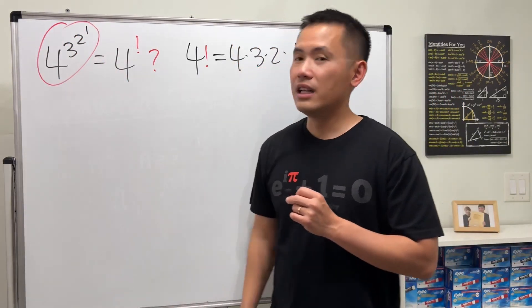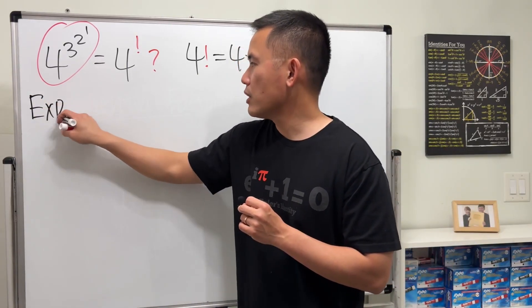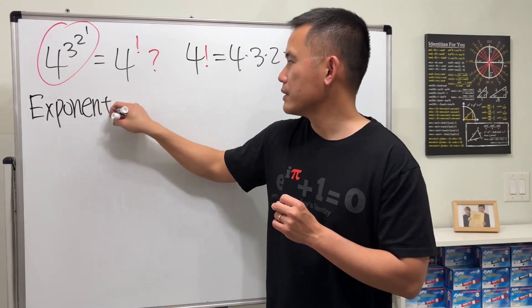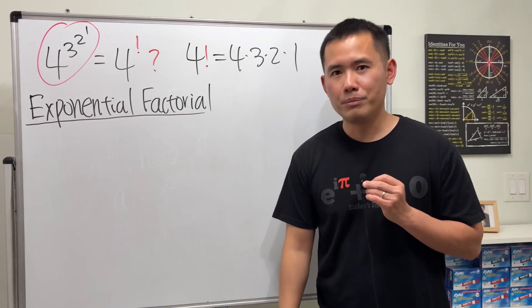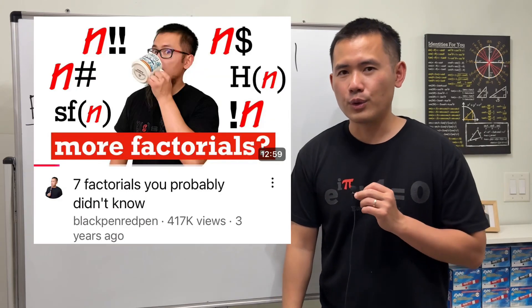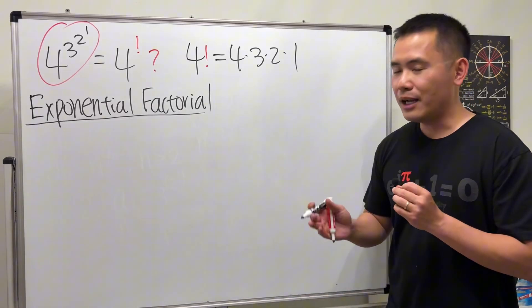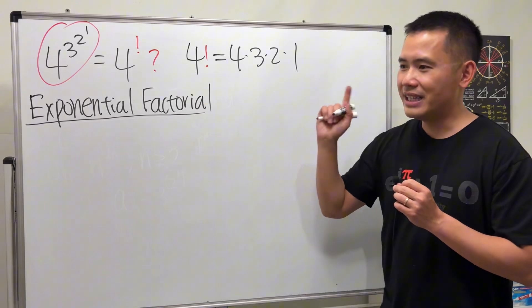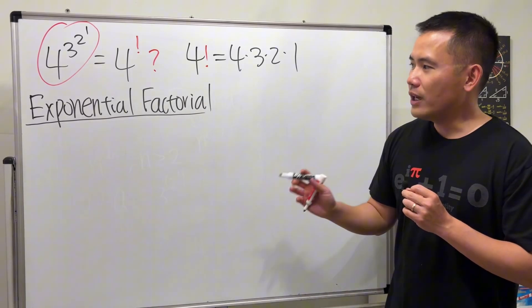Not sure about the notation, but there's one thing I can tell you. This is actually a legitimate thing. This is called an exponential factorial. And yes, there are different kinds of factorials out there, so be careful. I actually have a video on seven factorials that you probably didn't know. I actually did not include this one in that video, so let's talk about this one right here a little bit.